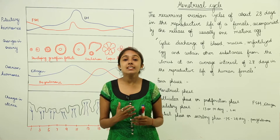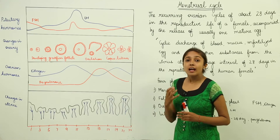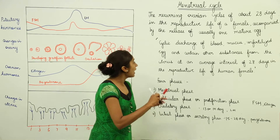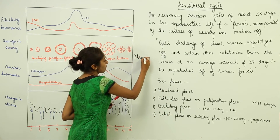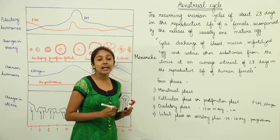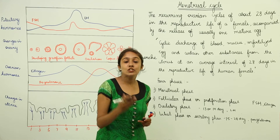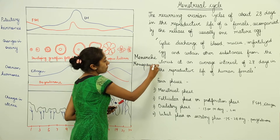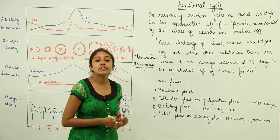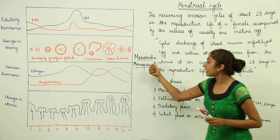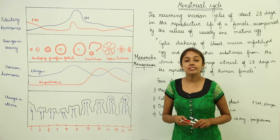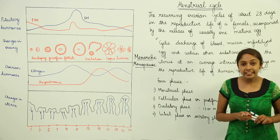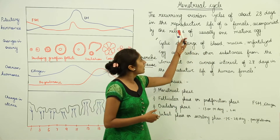Now, menarche and menopause: when the menstrual cycle begins at the age of puberty, that is called menarche. When at the age of 45 to 50 the menstrual cycle stops, it is known as menopause. So the menstrual cycle starts at puberty — menarche — and the cessation of the menstrual cycle is called menopause.